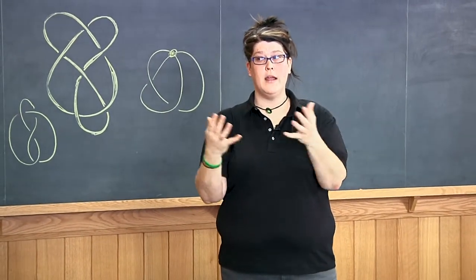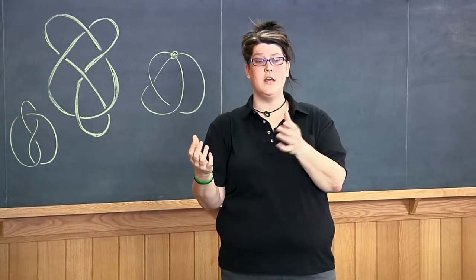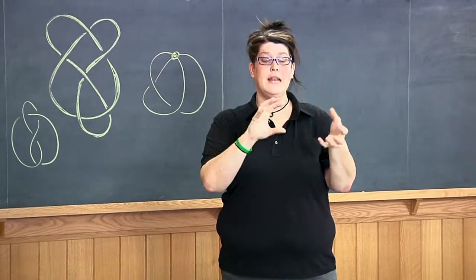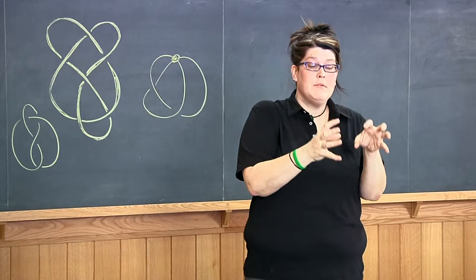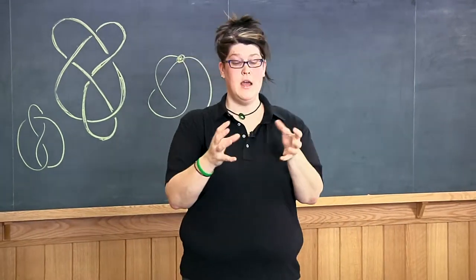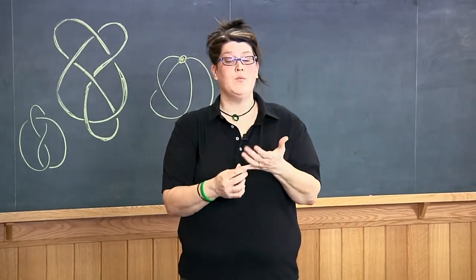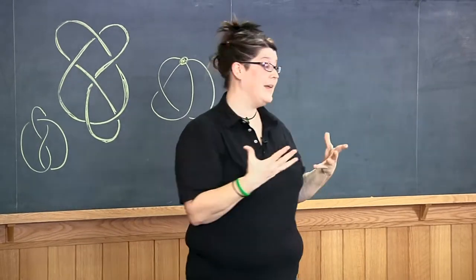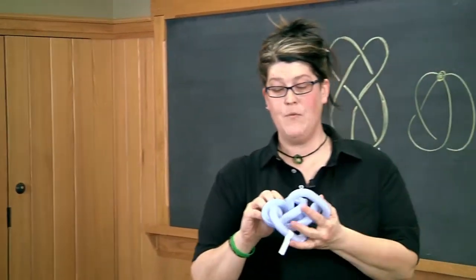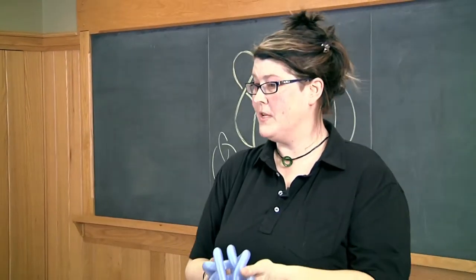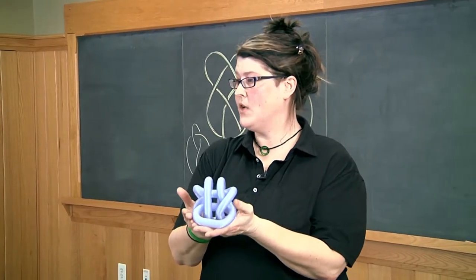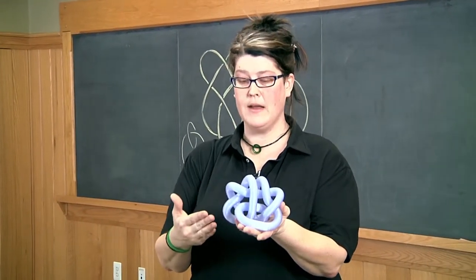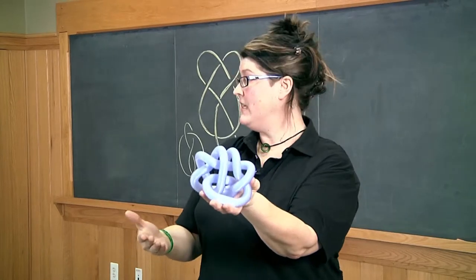Jason Cantarella and some students at the University of Georgia used gradient descent to find these sort of optimal conformations of knots, these minimal conformations. They're minimal in terms of how much rope is needed or how much energy is used or whatever your metric is. They're somehow like ideal configurations. These configurations came with a set of data describing them in space. We realized that we could actually print them. So we could take this data, put it into Mathematica, and then actually make one of these knots.